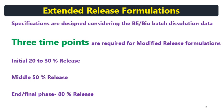If the API content of the formulation is, for example, 100 mg, then at the initial time point it will release around 25 mg, then at the middle time point around 50 mg, and at the end time point it should release the complete dose — that is, around 80% or above.